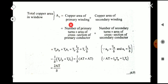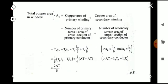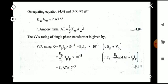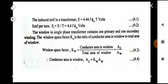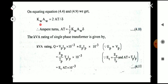Our aim is to compare this derived expression for A_c with the earlier equation. By comparing equation 4.4 (A_c = K_w A_w) with the derived result (A_c = 2AT / δ), we get K_w A_w = 2AT / δ. Therefore, the ampere-turns AT = (1/2) × K_w × A_w × δ.